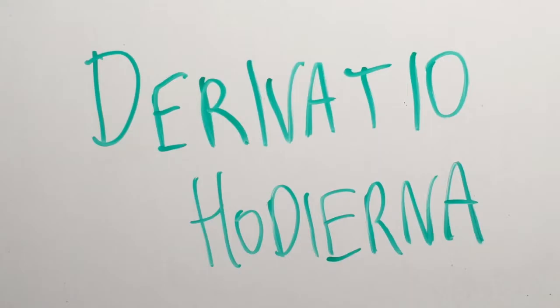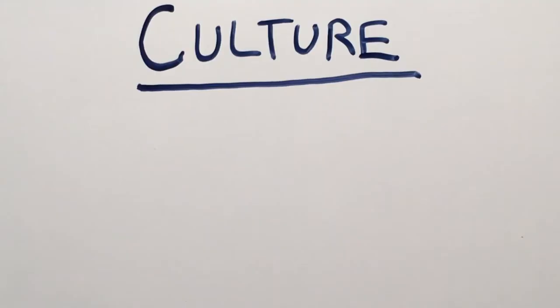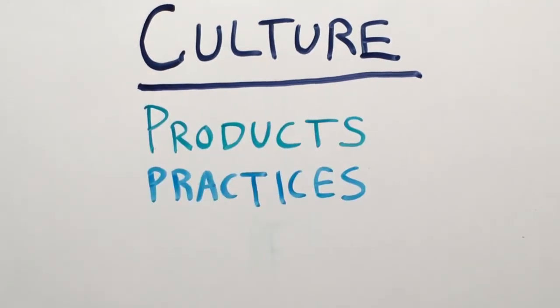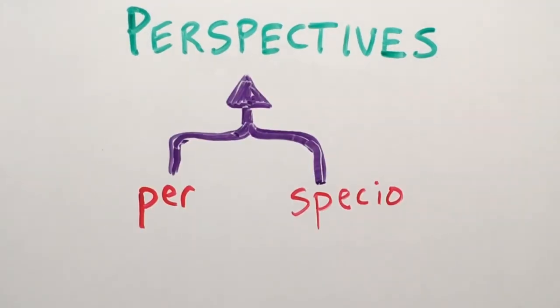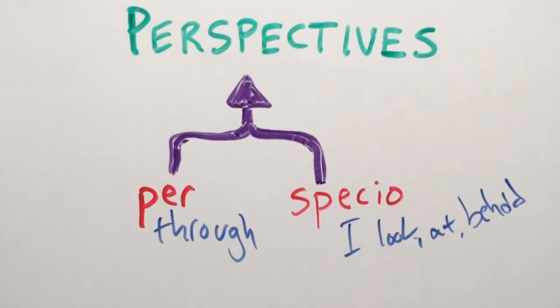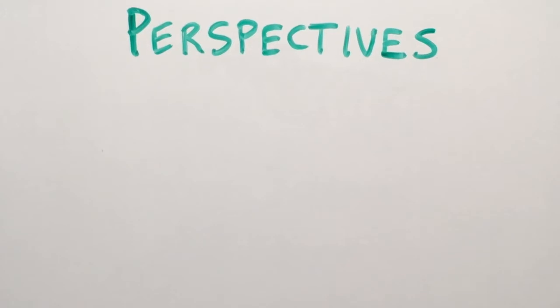Derivatio hadierna est perspective. Culture, meta in linguis discendis maxima, dividitur in partes tres: products, practices, and perspectives. Perspective, de per, anglicae through, et specchio, anglicae look at, behold. Perspective est quomodo homines mundum speciant, quid de rerum natura putent.